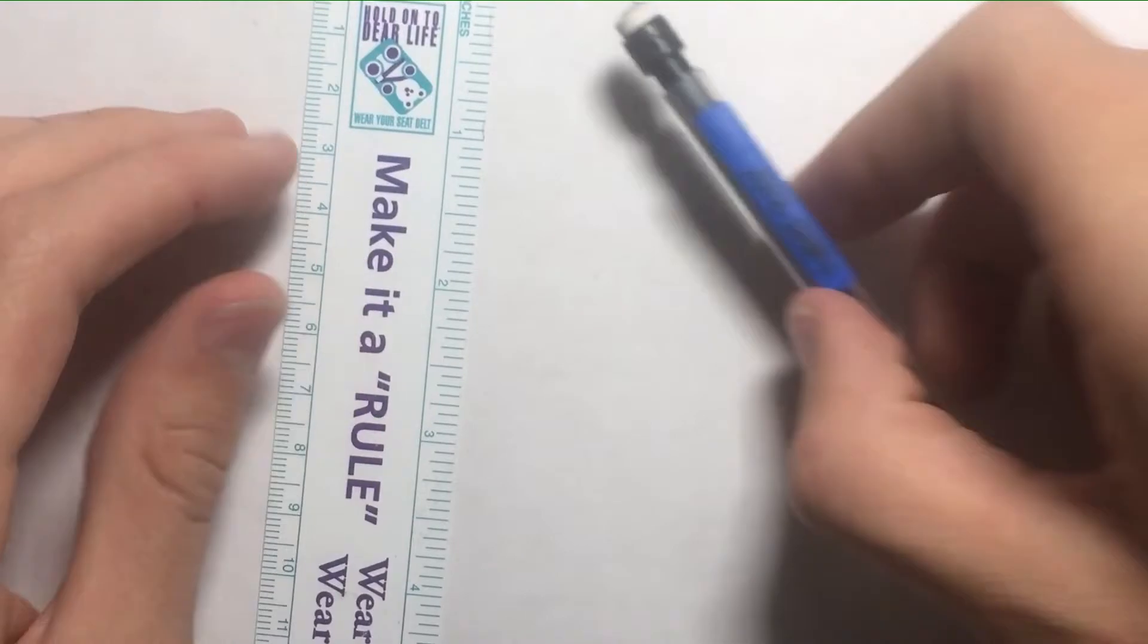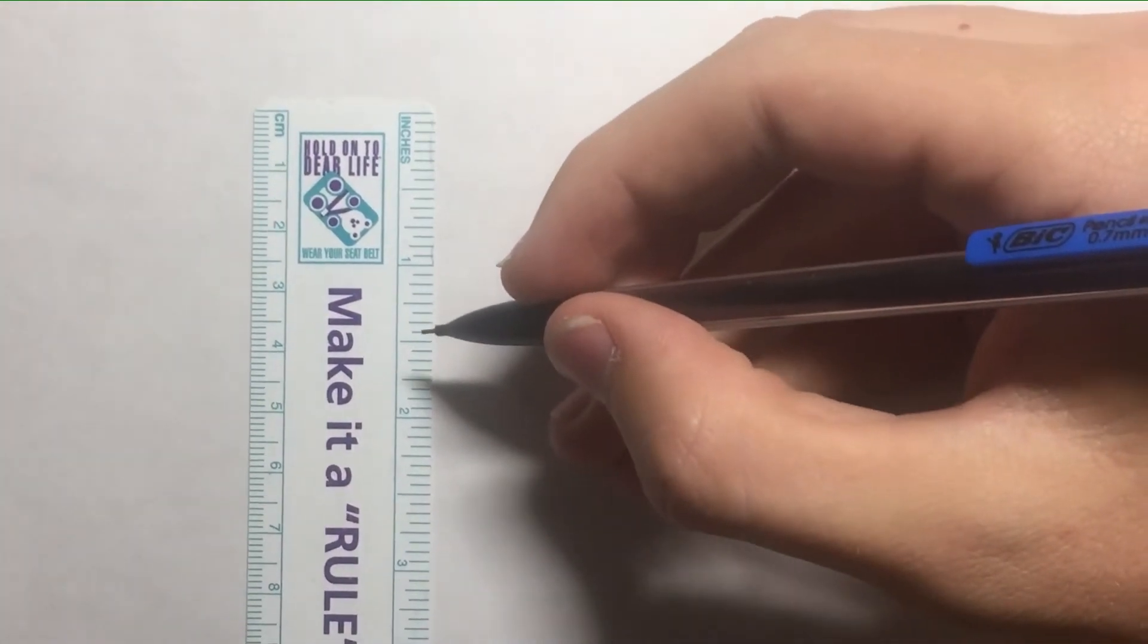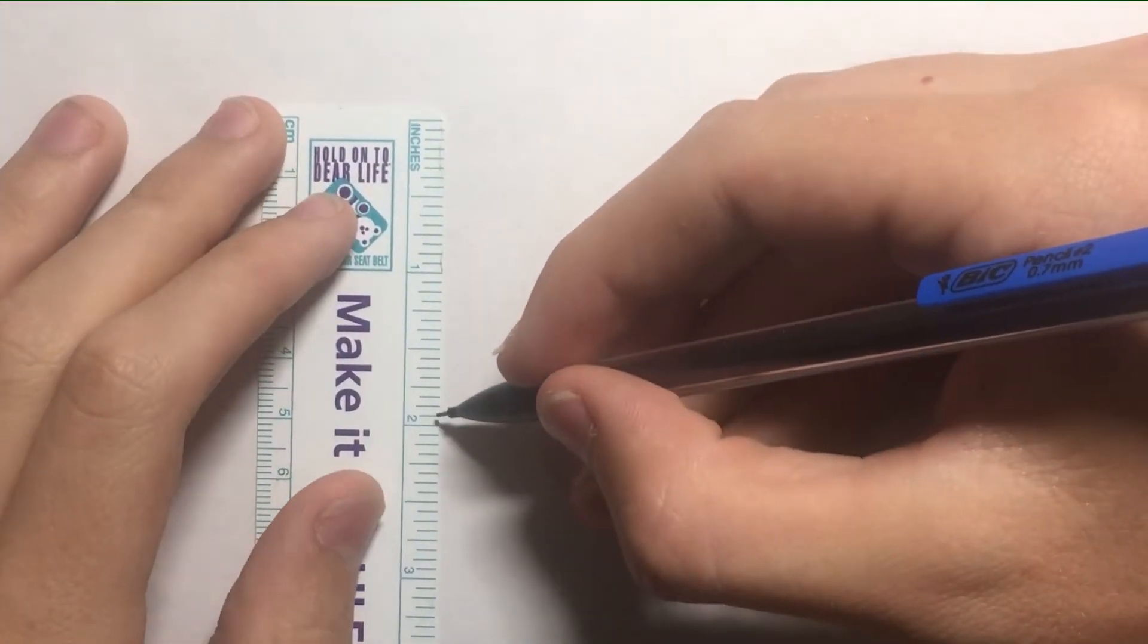So I figured out how to make an equilateral triangle without any angles. All you need is just a ruler and a pencil. So first I'm going to try to do one where it's two inches on each side.